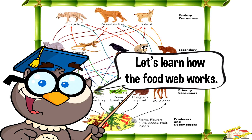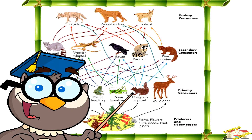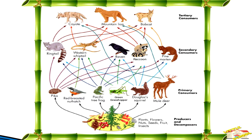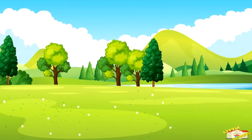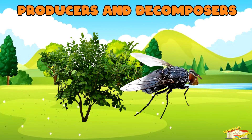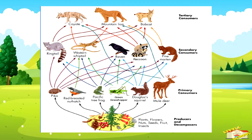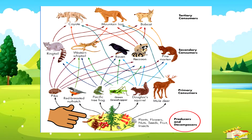Let's learn how the food web works. Producers and decomposers are organisms that occupy the first trophic level in a food web.